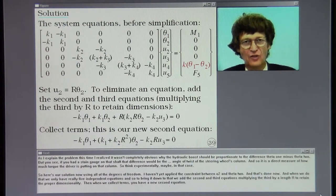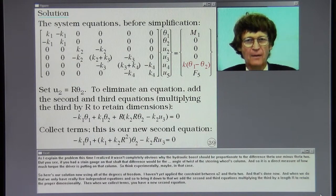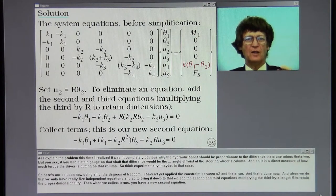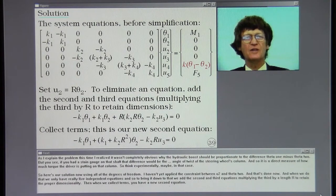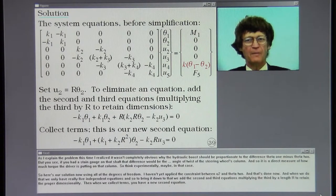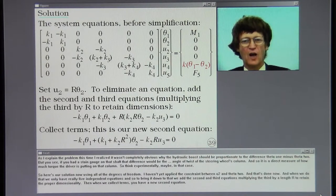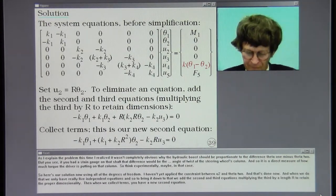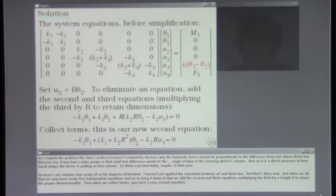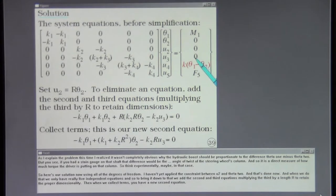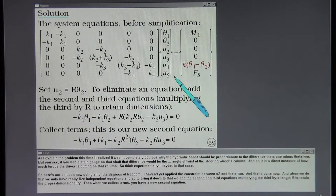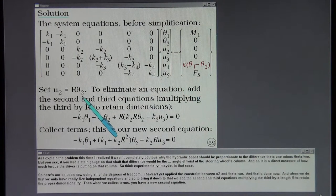As I explained the problem this time, I realized it wasn't completely obvious why the hydraulic boost should be proportionate to the difference theta 1 minus theta 2. But you see, if you had a strain gauge on that shaft, that difference would be the twist, the angle of twist of the steering wheel's column. And so it is a direct measure of how much torque the driver is putting on that column. So think experimentally maybe in that case. So here's our solution now using all of the degrees of freedom. I haven't yet applied the constraint between U2 and theta 2. And that's done now.